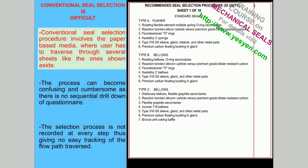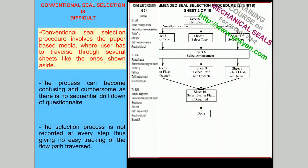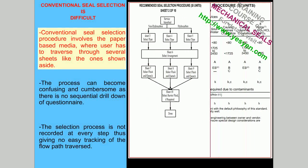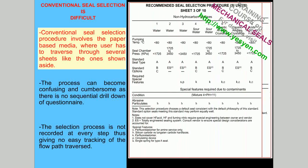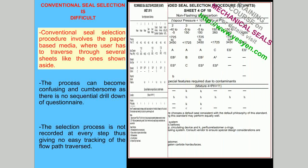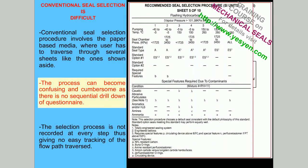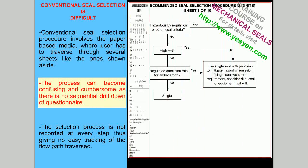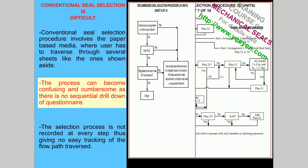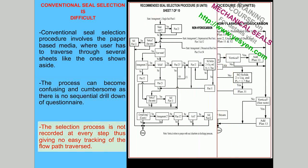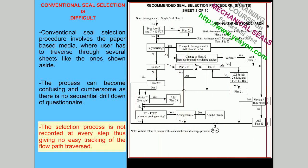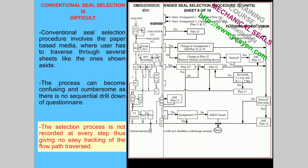Conventional seal selection procedure involves the paper-based media, where users have to traverse through several sheets like the ones shown aside. The process can become confusing and cumbersome as there is no sequential drill down of questionnaire. The selection process is not recorded at every step, thus giving no easy tracking of the flow path traversed.